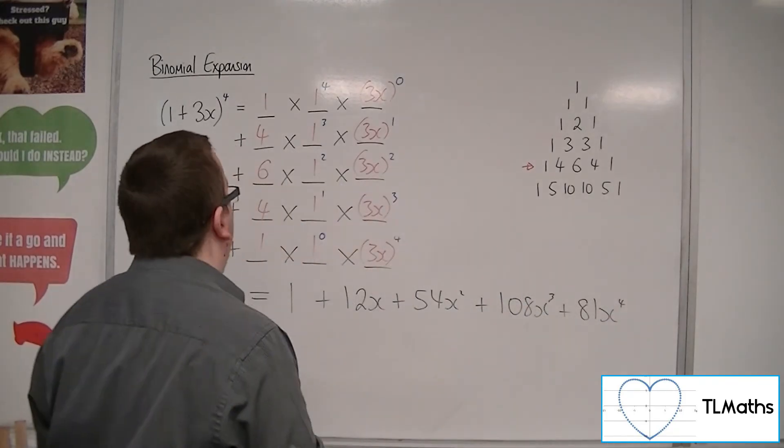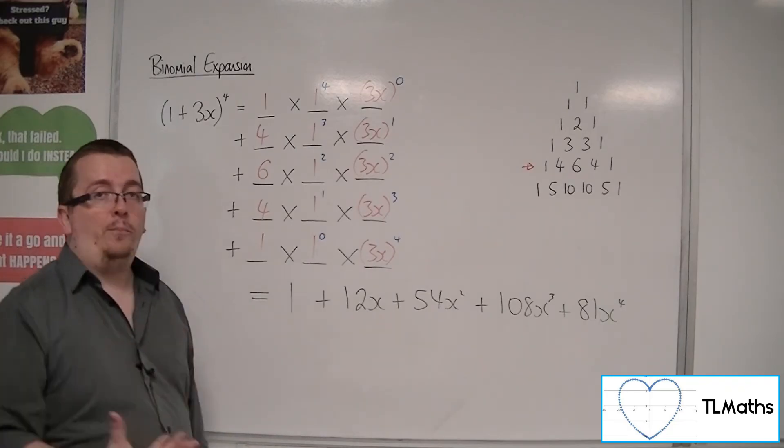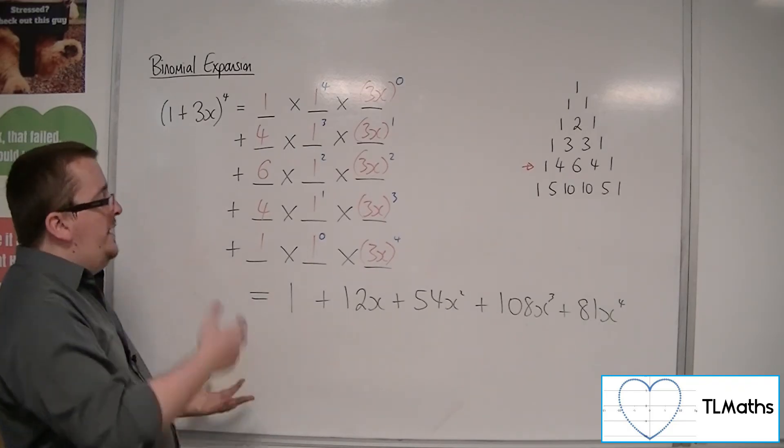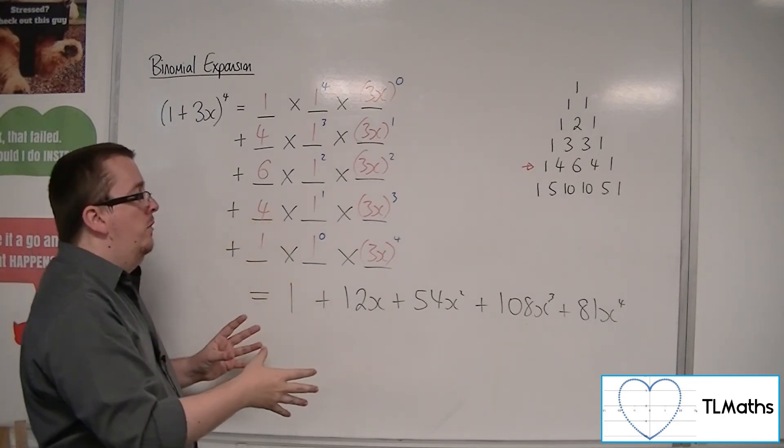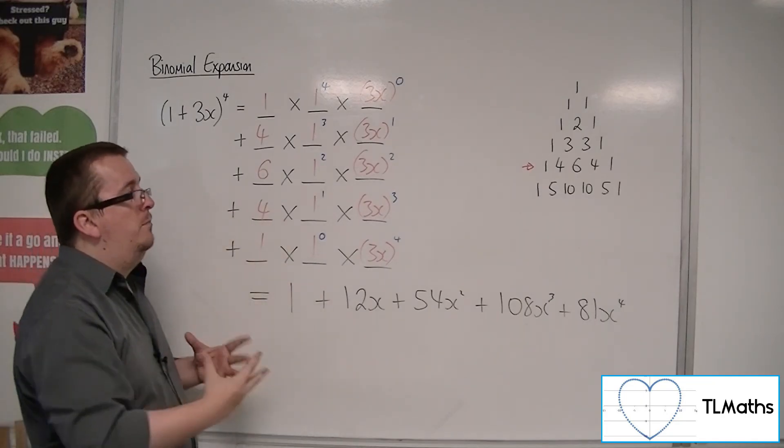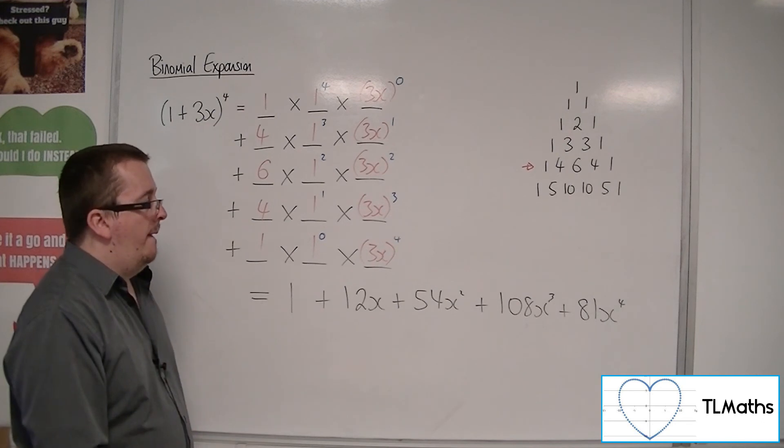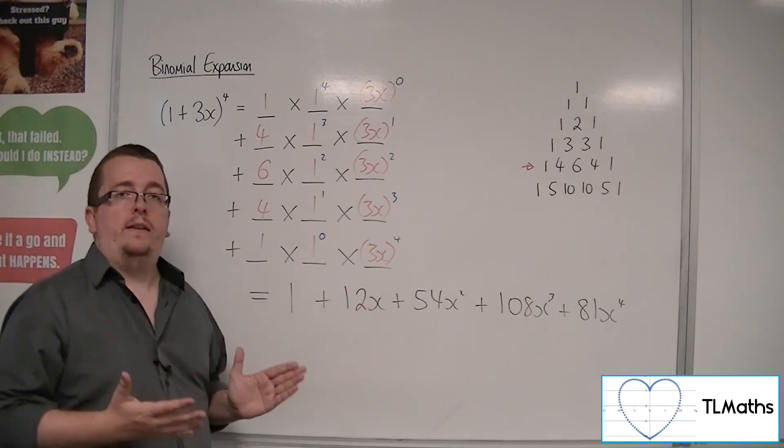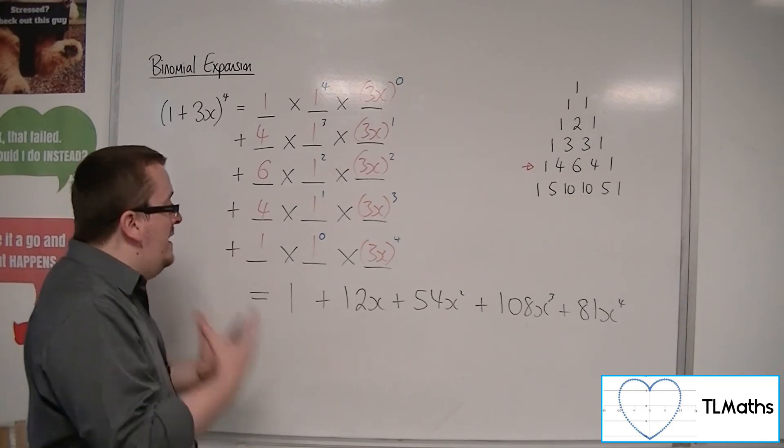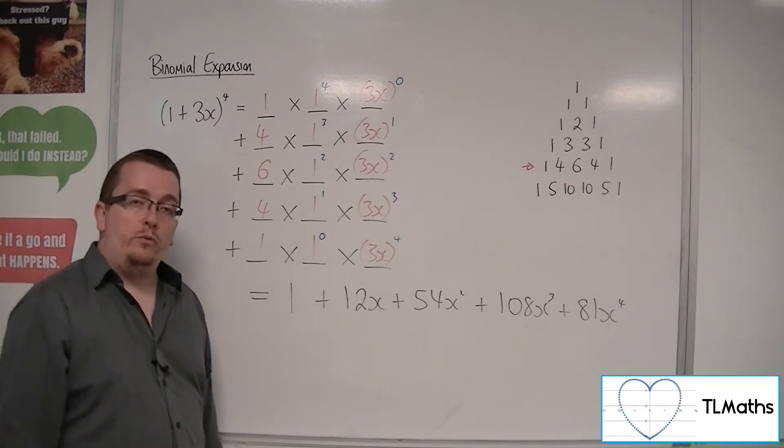And there you are. That is (1 + 3x)^4, expanded. And hopefully, you can see that although it relies very much on pattern, it is much quicker than expanding it as 4 separate brackets. And you're less likely to make mistakes this way as long as you follow the rules of the patterns.